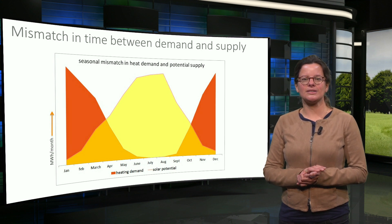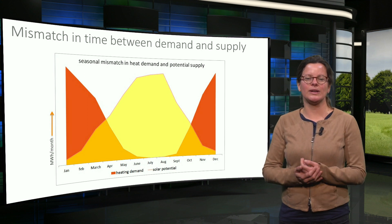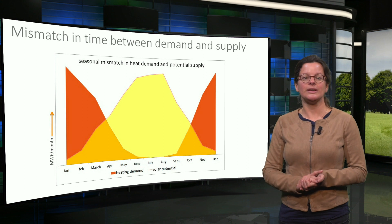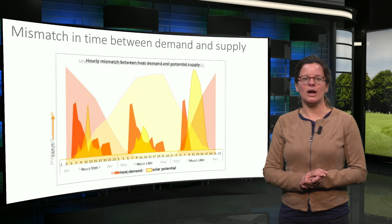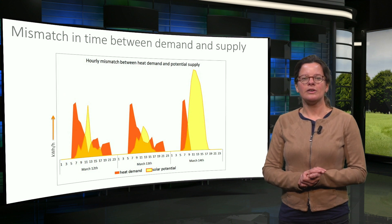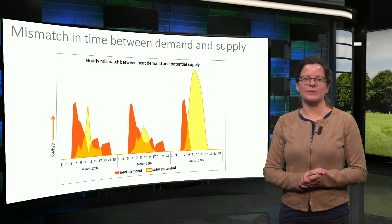A very clear example is the seasonal mismatch between heating demand in a relatively cold climate and the solar energy potential in the same climate. But there are also hourly differences between demand and supply occurring each day, as is illustrated in this figure.